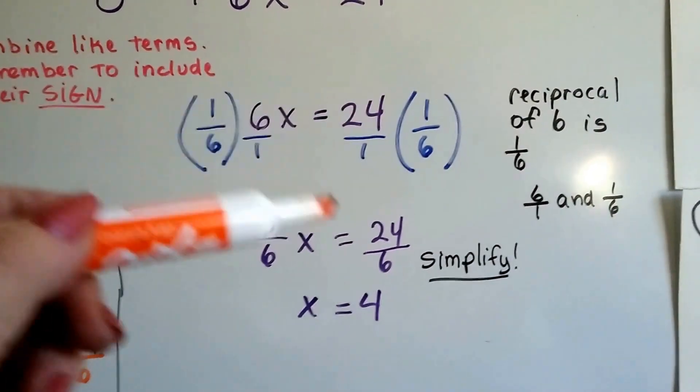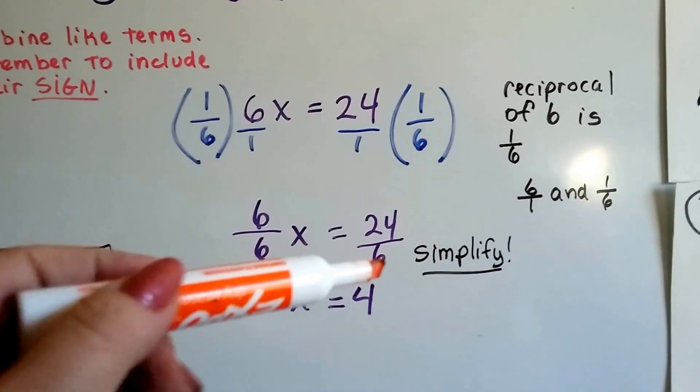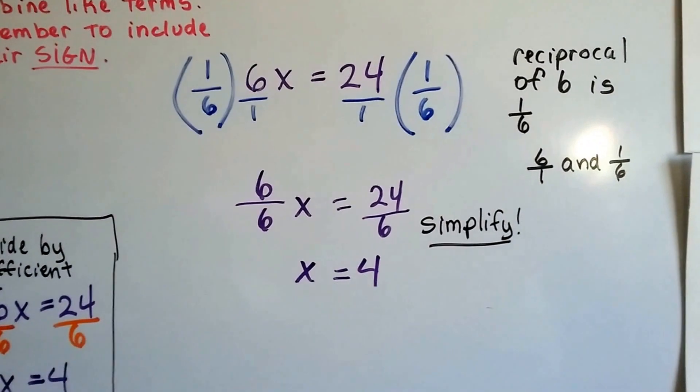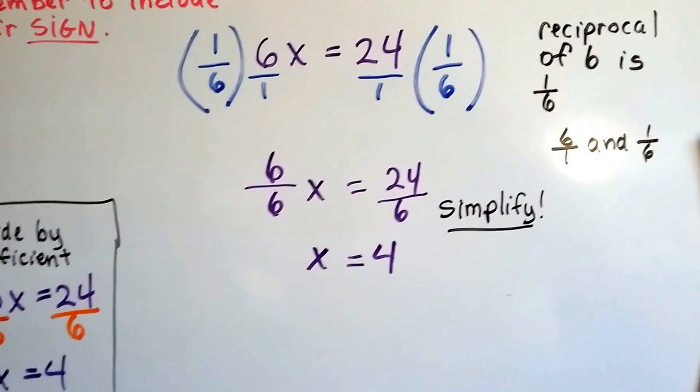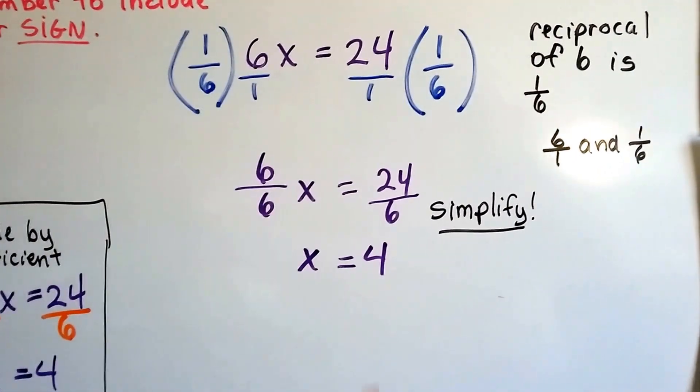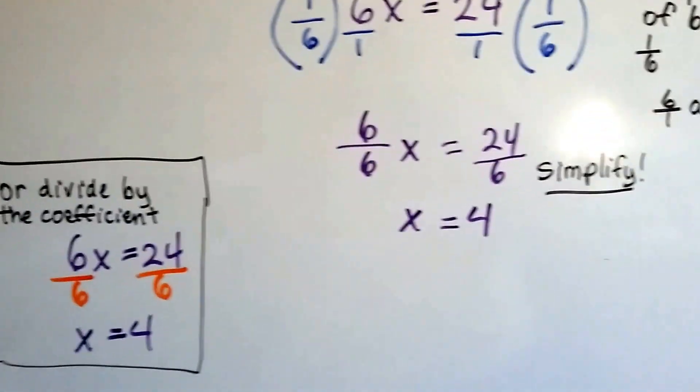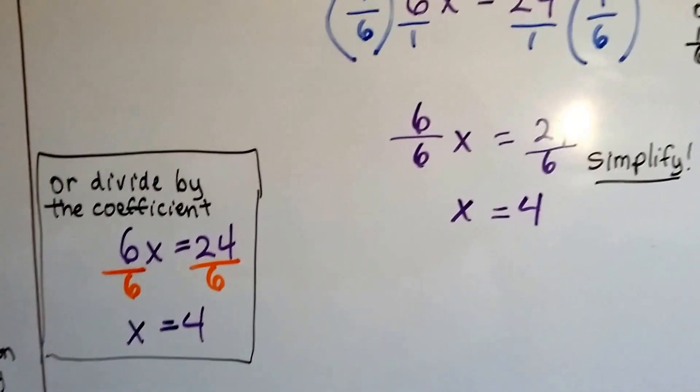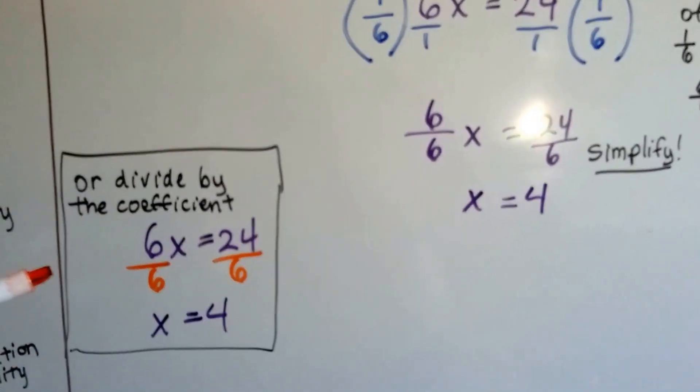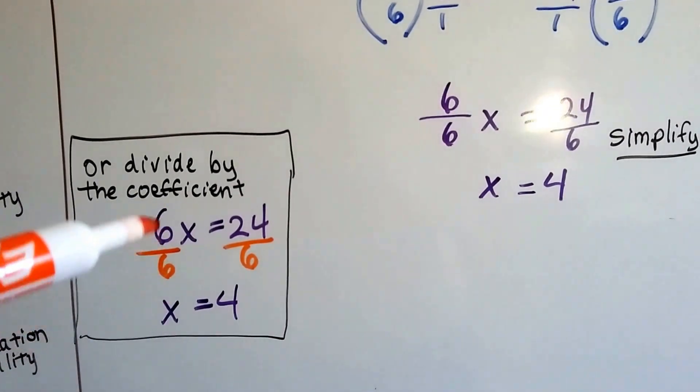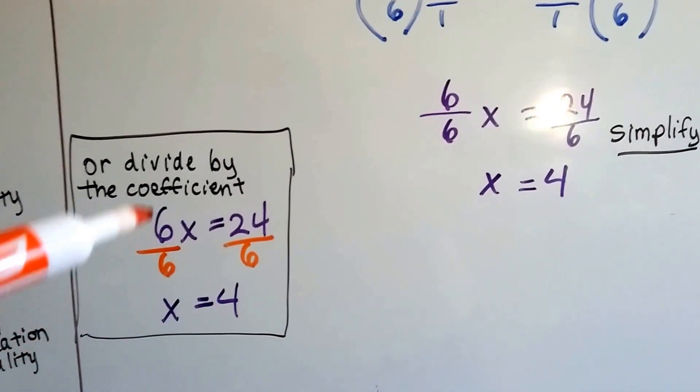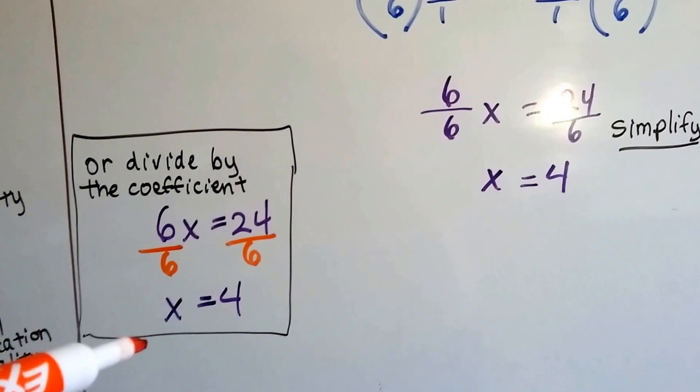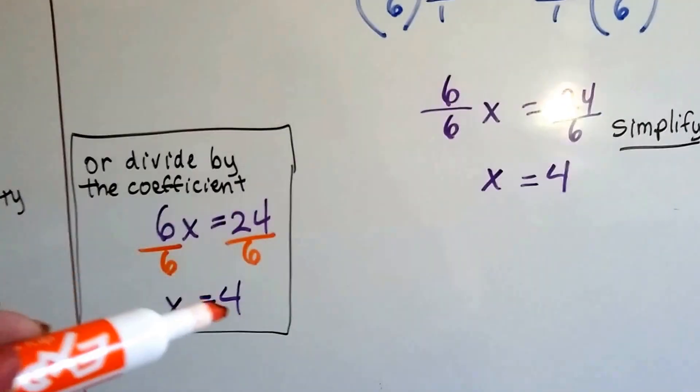24 times 1 is 24, over 1 times 6 is 6. We've got 24 over 6. We simplify that. 6 times 4 is 24, so we know it's a 4. And we can also divide to skip the step of the reciprocals and go quicker. Just divide both sides by that coefficient. 6 divided by 6 is our friend, the invisible 1. 24 divided by 6 is 4.